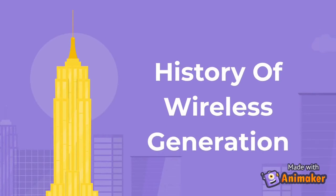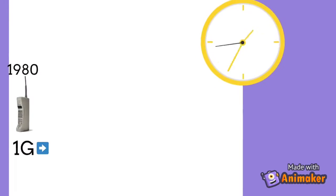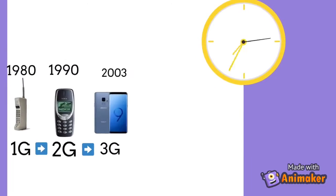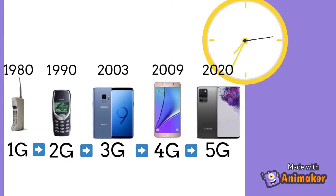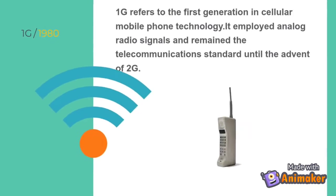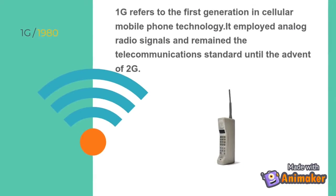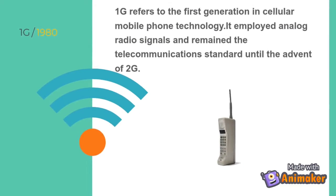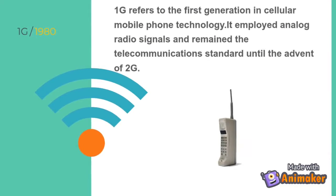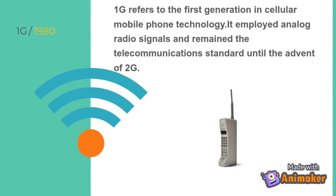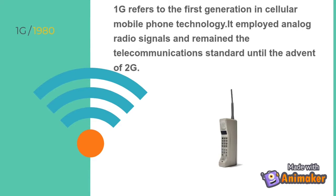This video is about the history of wireless generations. Let's explore how the wireless network began and evolved. 1G refers to the first generation in cellular mobile phone technology. It employed analog radio signals and remained the telecommunications standard until the advent of 2G.